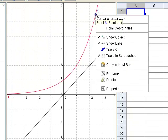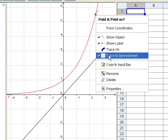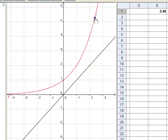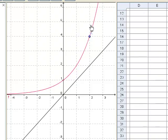So I can actually right click on this and I can see that I can trace this to spreadsheet, so make sure that that's on. Then when you grab the point and start to move it, it will automatically get traced into the spreadsheet.